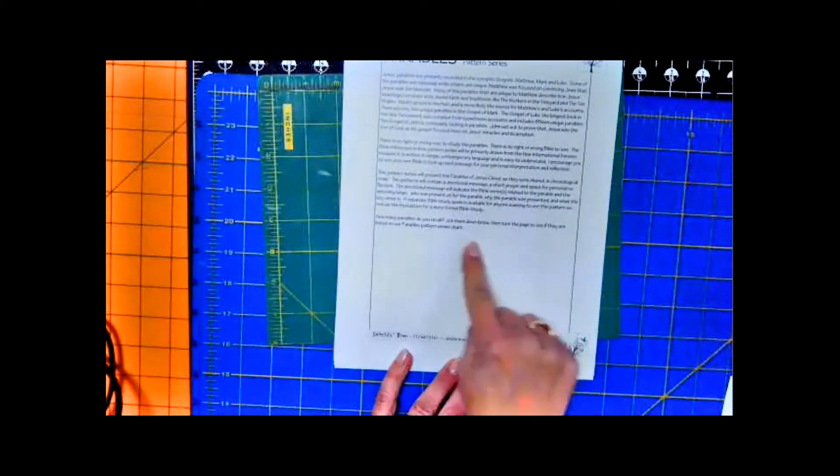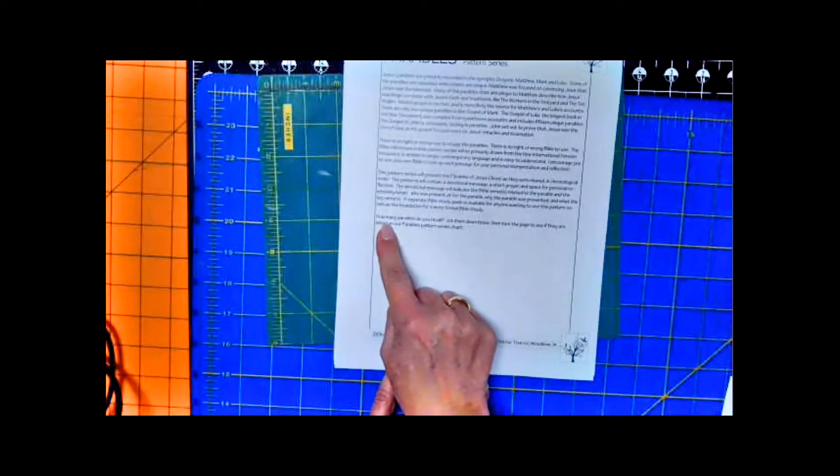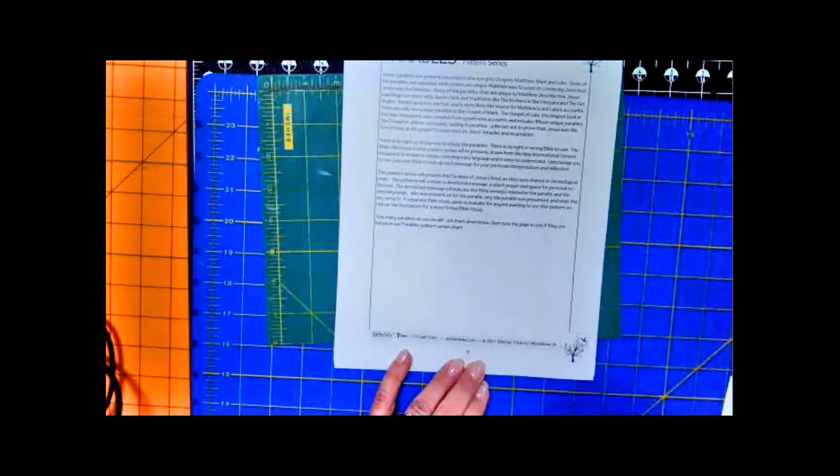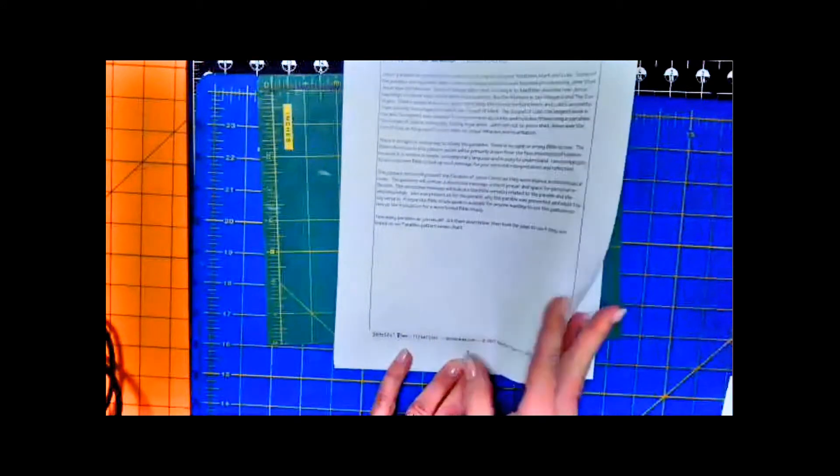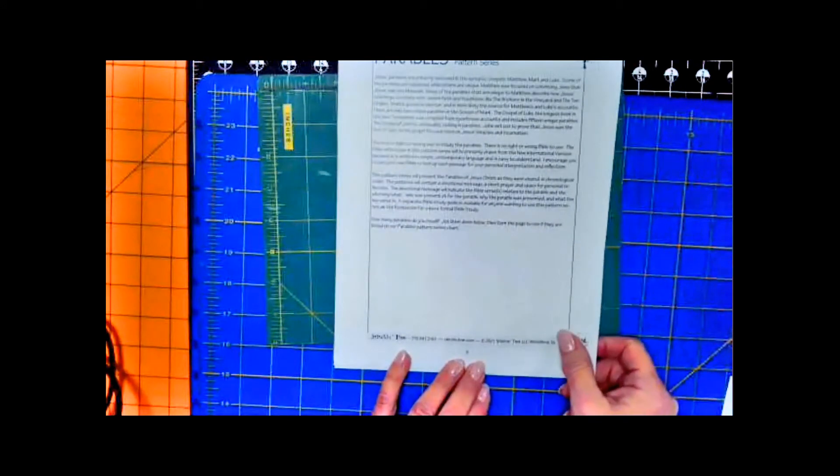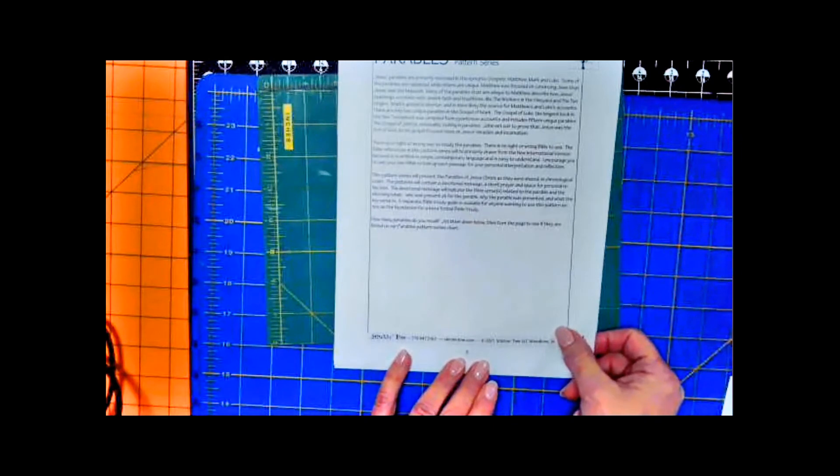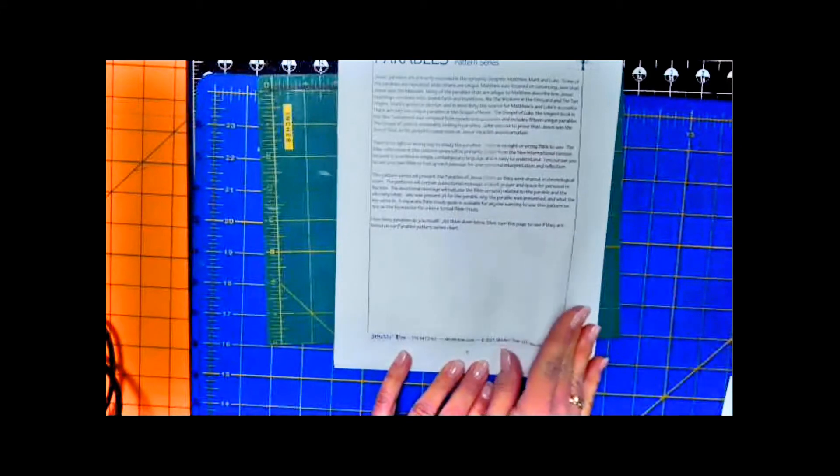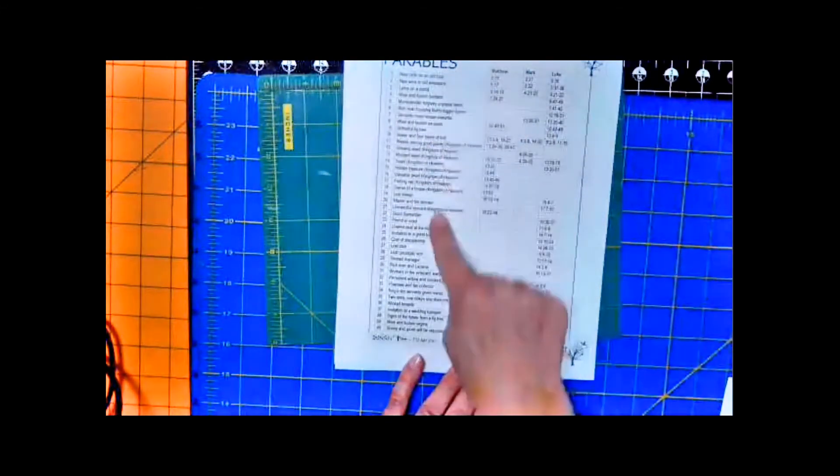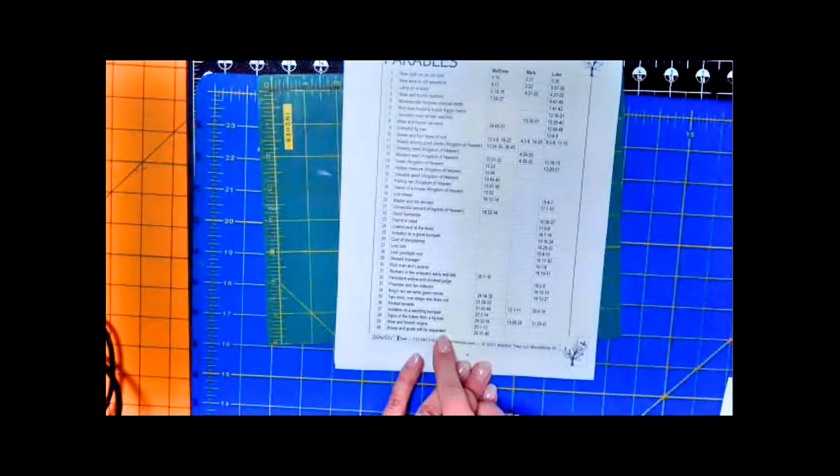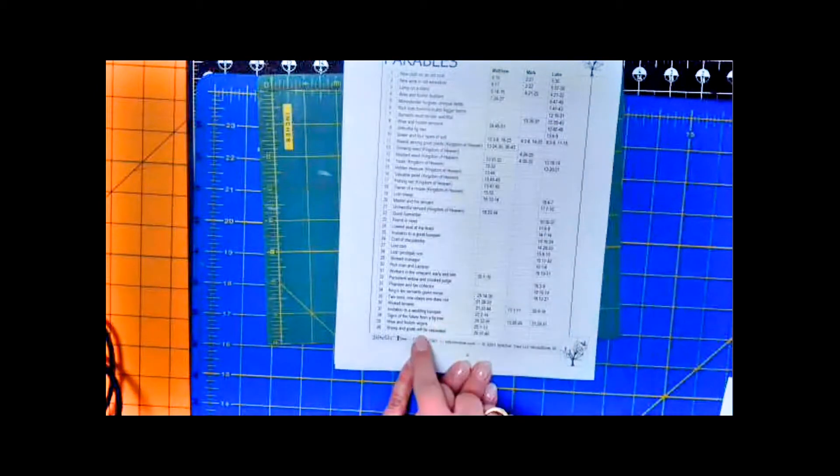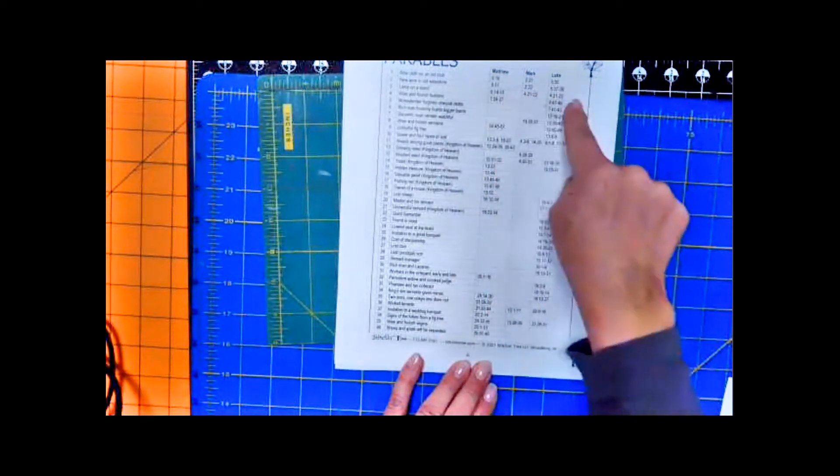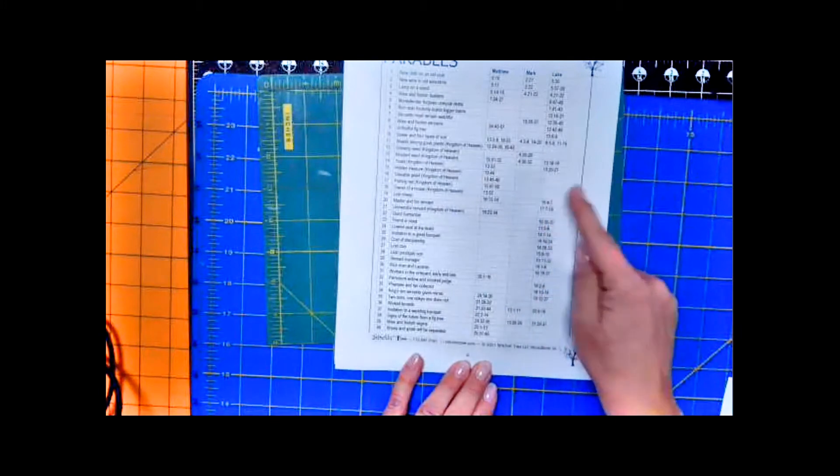And down here at the bottom, just kind of fun, just kind of picking your brain. I wrote the question, how many parables do you recall? Jot them down below before you turn the page to see if they're listed in our chart. So for example, if one of the parables you remember from your childhood or from recent church services is the parable of the prodigal son, jot it down and then flip the page and you will see that these are the 40 parables that we're going to include in our series in the next 12 months. All 40 of these parables will appear somewhere in the next 12 months. And here are the Bible references for each one of them.